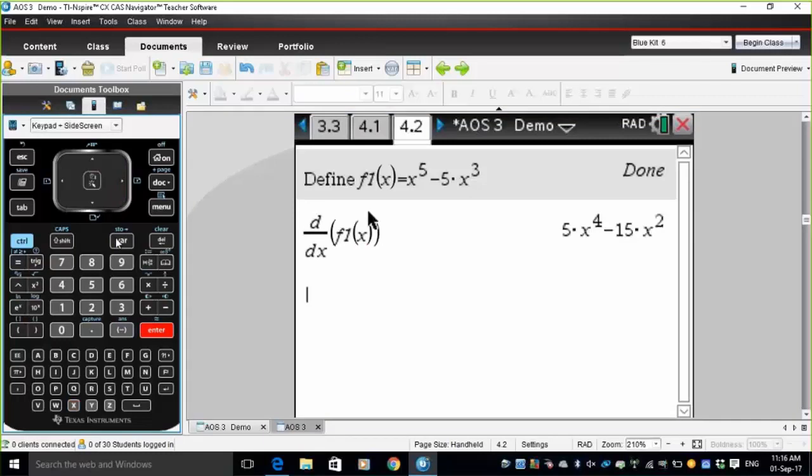So that's my gradient function, 5x to the fourth minus 15x squared. Obviously we could have differentiated that by hand and got that answer. But obviously for more complicated functions, you can use this template to find the gradient function.